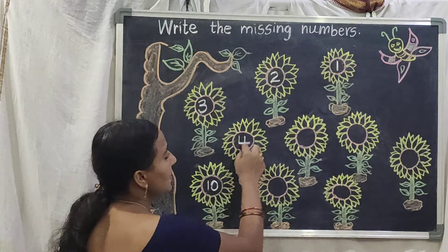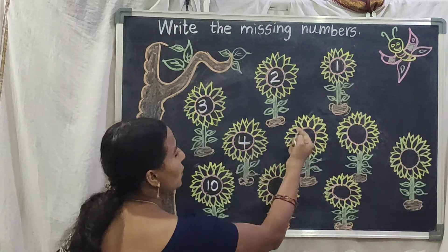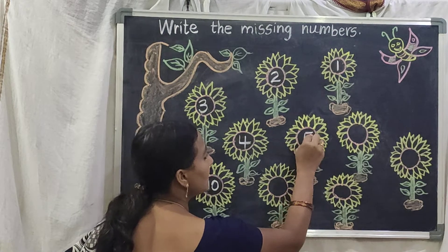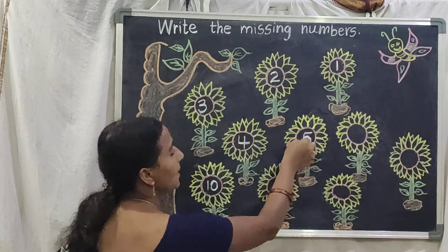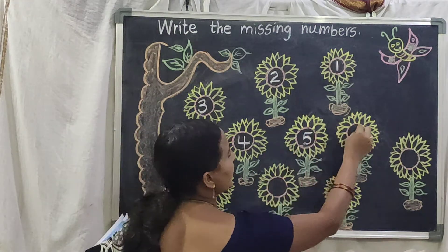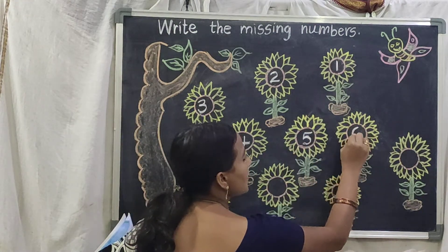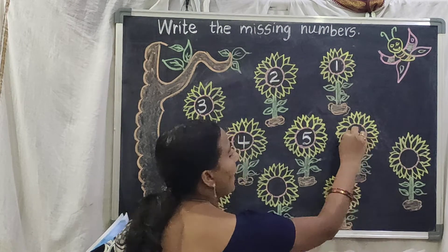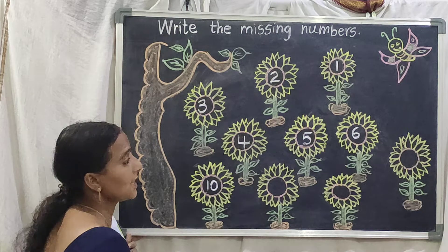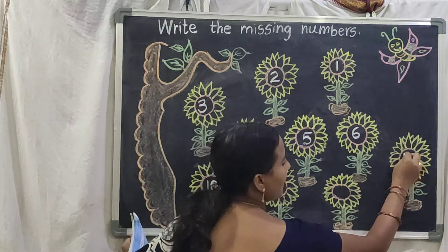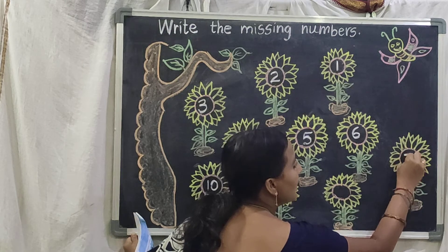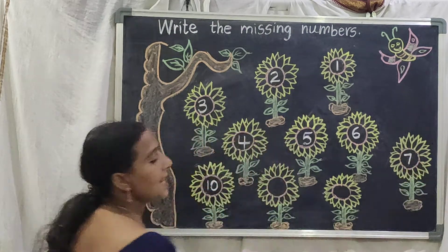4 after 5. Go to next flower. Sleeping line, standing line. Write the number 5. 5 after 6 — write the number 6. And next flower. 6 after which number will come, children? 7. Go to this flower. Sleeping line, slanting line — 7.